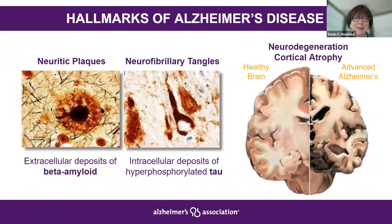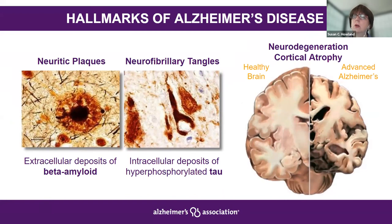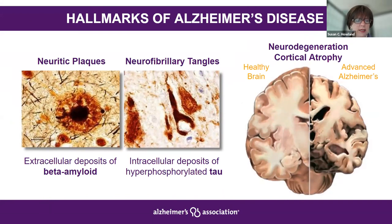With Alzheimer's disease, there are three hallmarks. The first is plaques, which occur between those nerve cells. There are tau tangles, which occur within a nerve cell. And there's neurodegeneration. On the left is a healthy brain, and on the right is a brain with severe Alzheimer's disease — you'll notice it's smaller in size. A lot of the damage in the brain occurs in areas important for cognition, memory, and general day-to-day functioning.